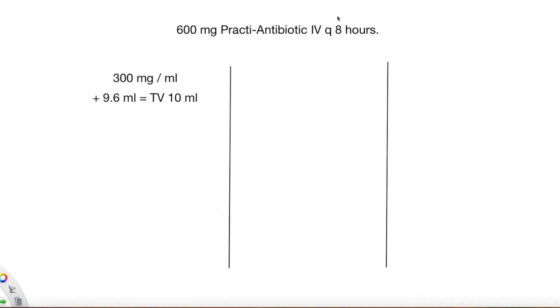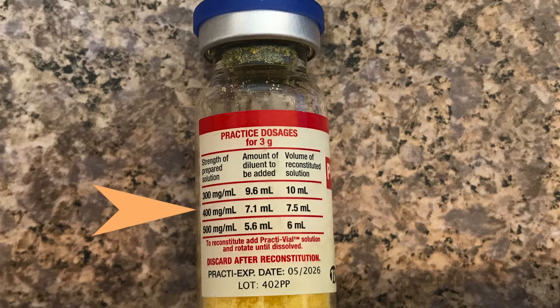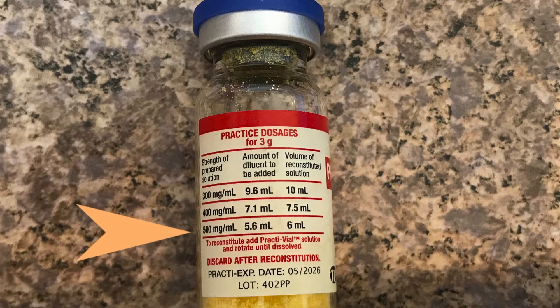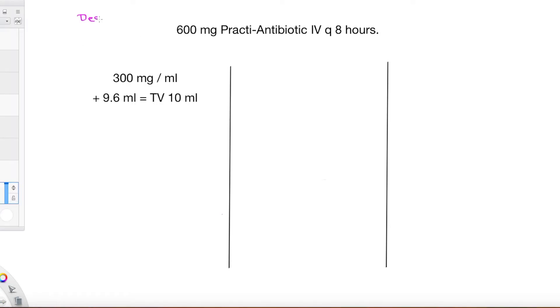So let's start with this order of 600 milligrams of an antibiotic. When I look at the vial I see that there are several different strengths in which I can dilute my medication. So I do have a desired dose of 600 milligrams and I have several options for an available dose.